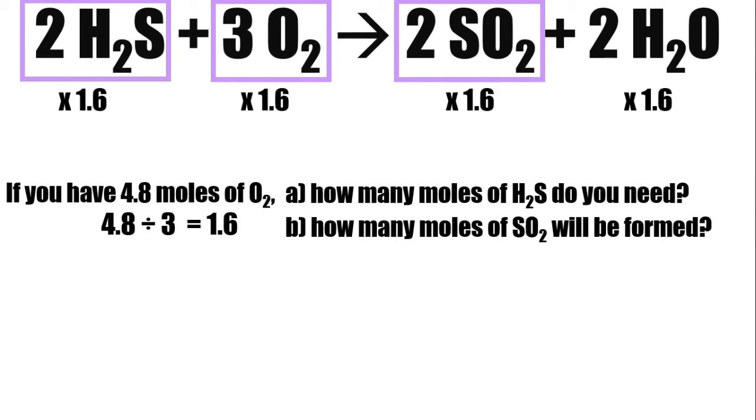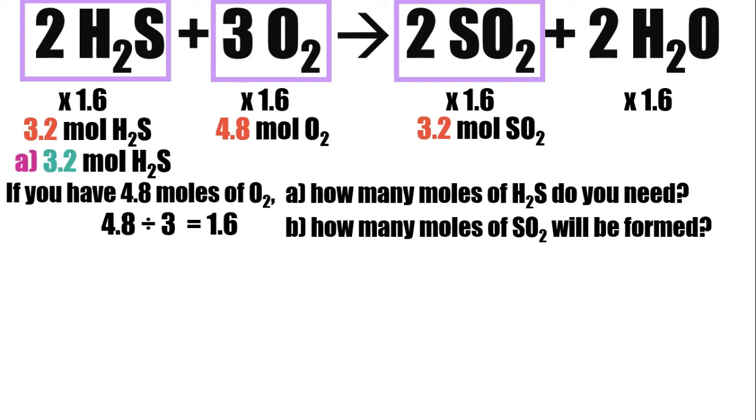Multiply everything by 1.6 for the same reason, so that we will not change anything. Because if you multiply this by 1.6 and divide it again by 1.6, you will come back to the original equation. For hydrogen sulfide, we will have 3.2 moles, we will have 4.8 moles for oxygen, and 3.2 moles for sulfur dioxide. So that's the final answer: 3.2 for hydrogen sulfide, and 3.2 for sulfur dioxide.